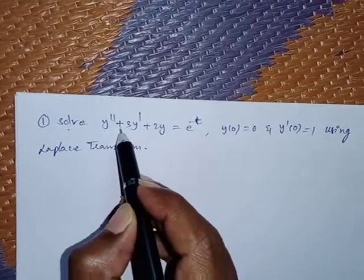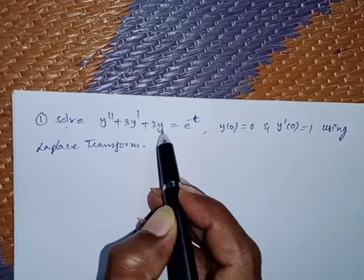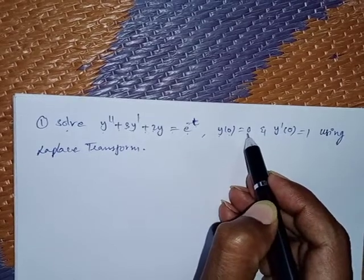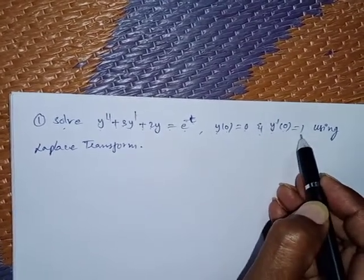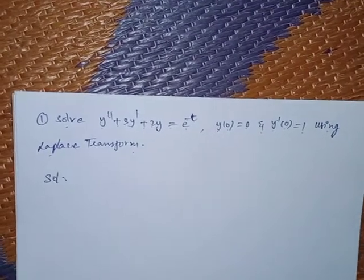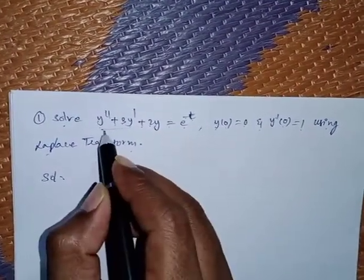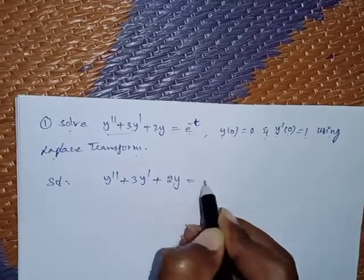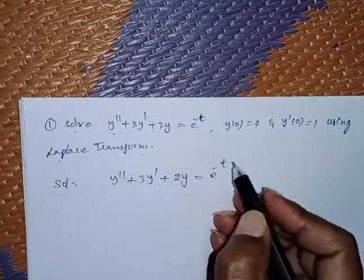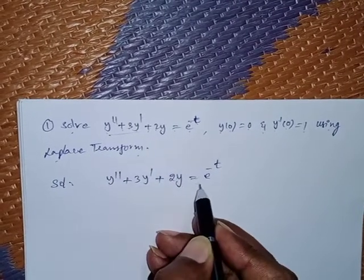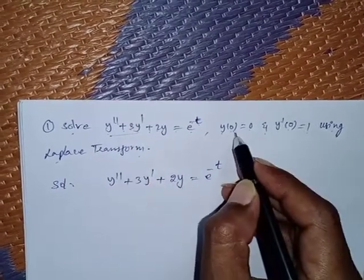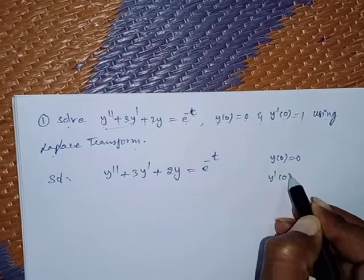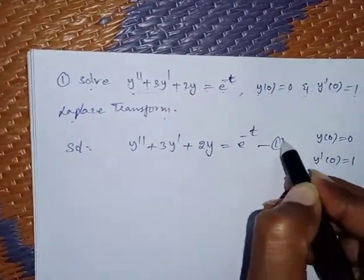Solve y'' + 3y' + 2y = e^(-t), where y(0) = 0 and y'(0) = 1 using the Laplace transform. First, write down the given differential equation: y'' + 3y' + 2y = e^(-t). We have to solve this equation using the Laplace transform and the given initial value conditions y(0) = 0 and y'(0) = 1. Consider this as equation number 1.